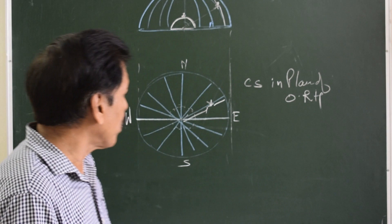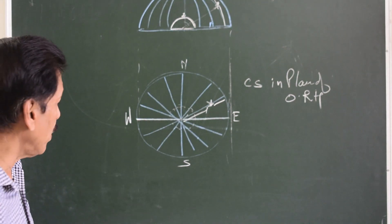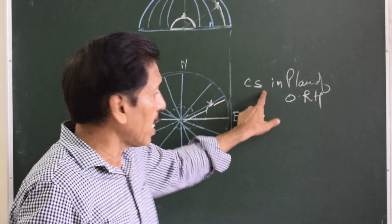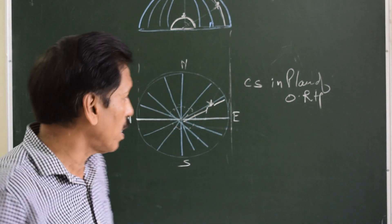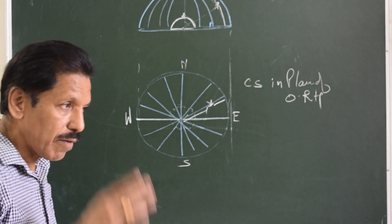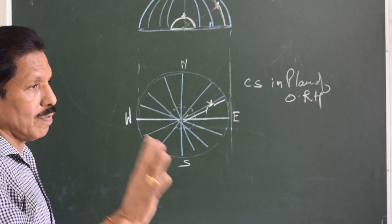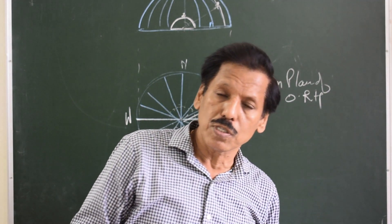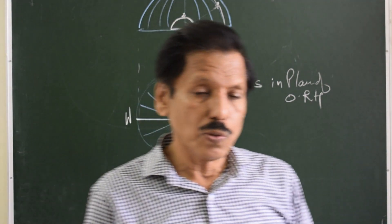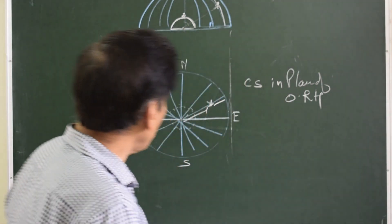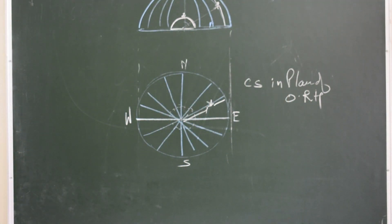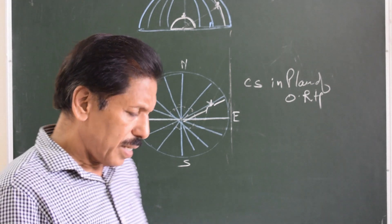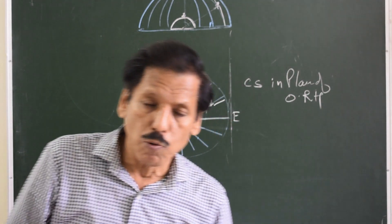Every diameter on this diagram — the celestial sphere in the plane of the observer's rational horizon — is an observer's vertical circle. Observer's vertical circles help you define true altitude and true zenith distance, which were defined in the previous lecture.